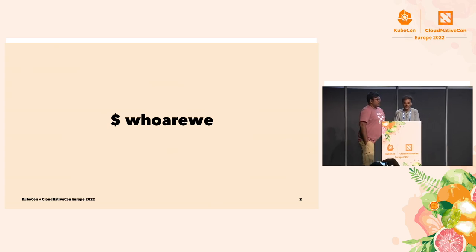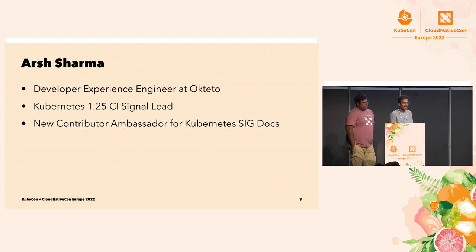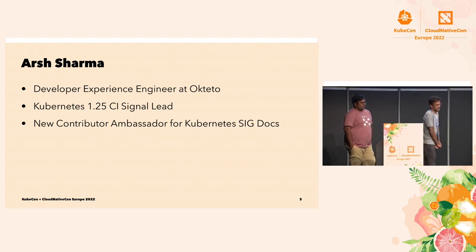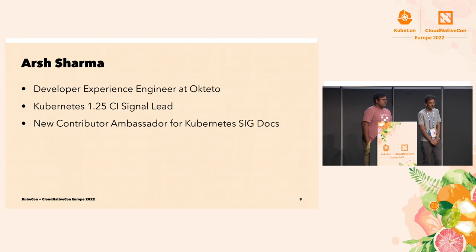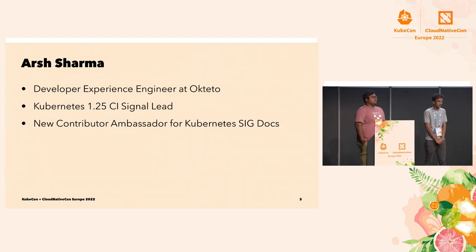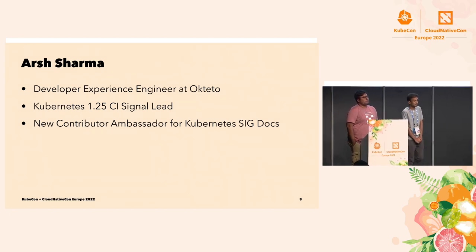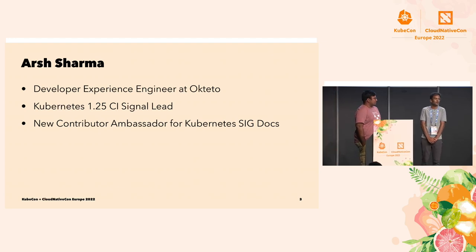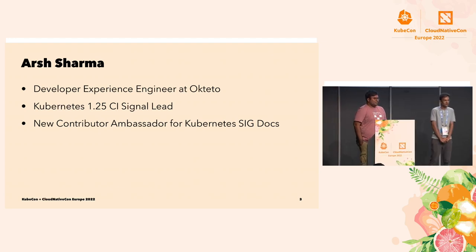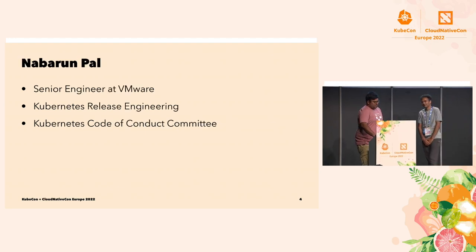I am Arsh Sharma. I work as a developer and experience engineer at Octeto. I also actively contribute to the Kubernetes project. I will be leading the CI signal team in the 1.25 release, and I'm a new contributor ambassador for Kubernetes SIG Docs, where I help people contribute to the project.